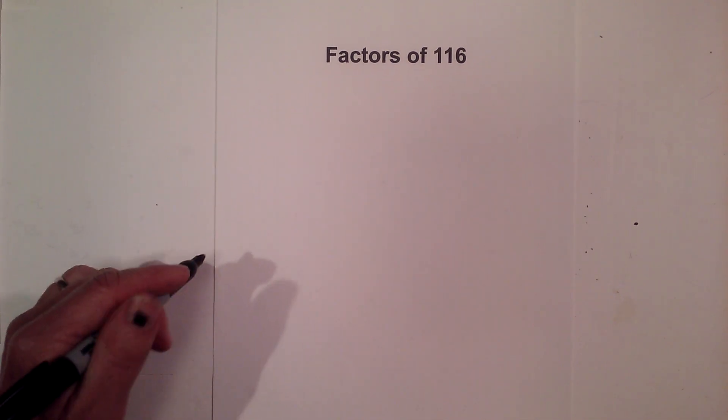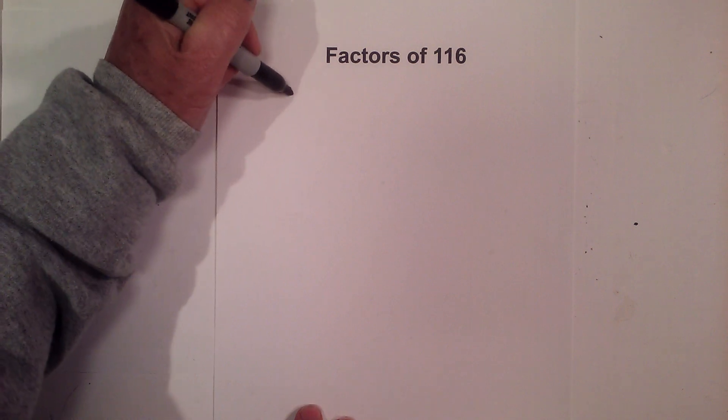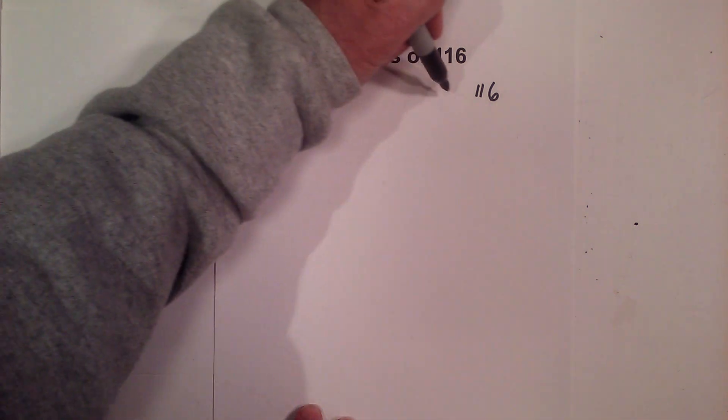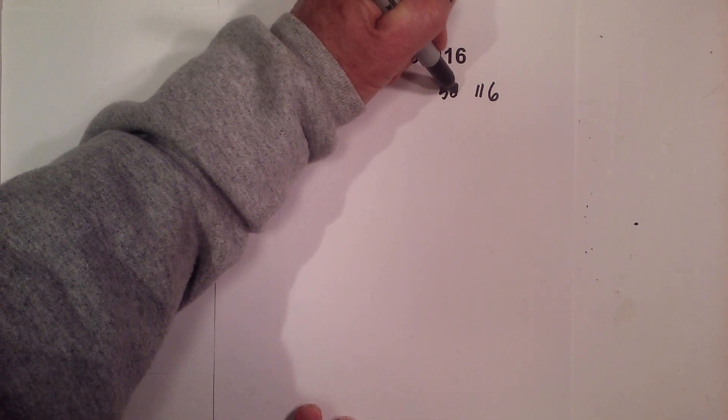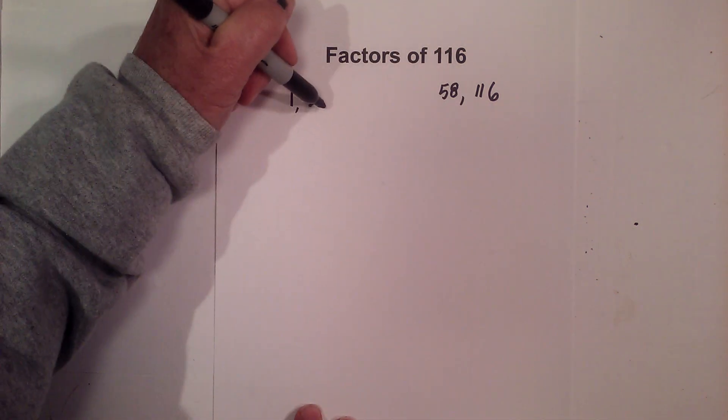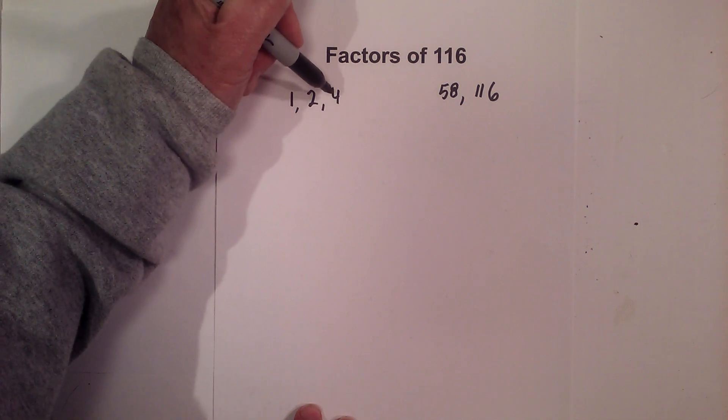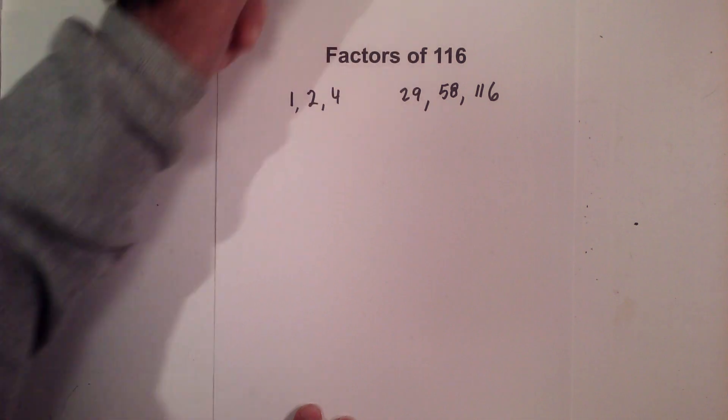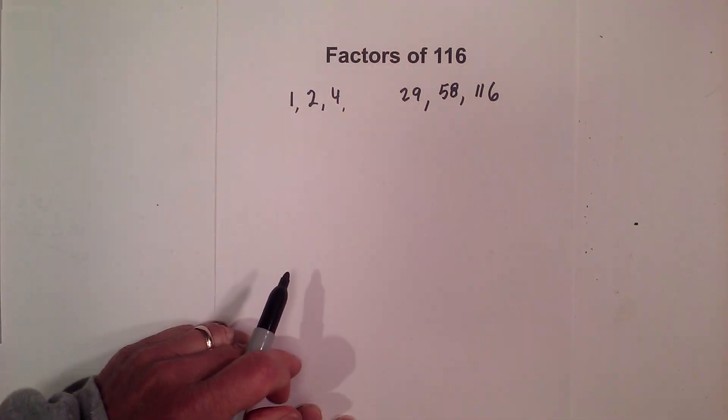We have 1 times 116, then we have 2 times 58, and next 3 does not go into it, but 4 goes into it 29 times. And then 5, 6, 7, 8, 9, or 10 do not go into it.